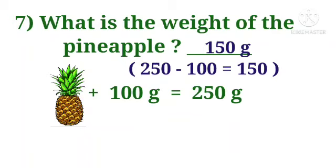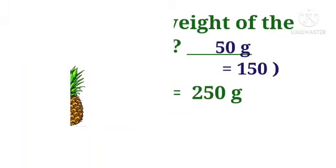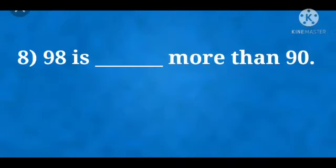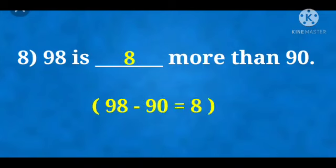Now number 8. 98 is dash more than 90. Means 98 is how much more than 90. So we can subtract 90 from 98 and we will get answer 8. So 98 is 8 more than 90.